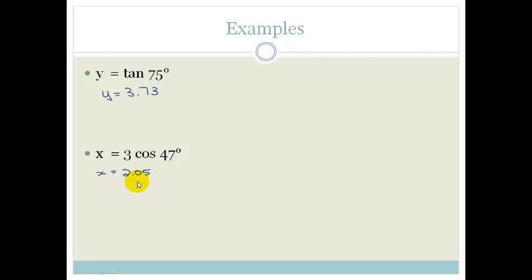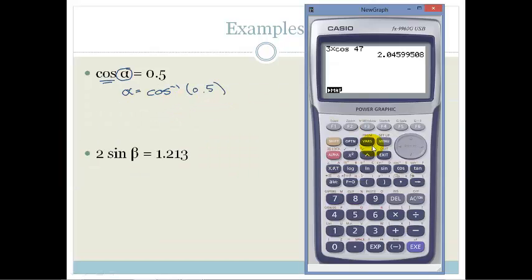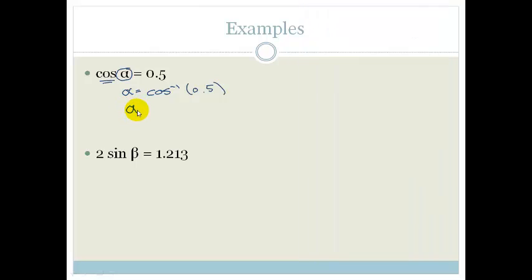So obviously that's ridiculously easy. Let's get into something more complicated. Now we've got cos alpha is equal to 0.5. We know in order to get rid of the cos, we need to say that alpha is equal to second function cos of 0.5. We're going to shift cos, finding the second function. So shift cos of 0.5 gives us a value of 60. So alpha is equal to 60 degrees.